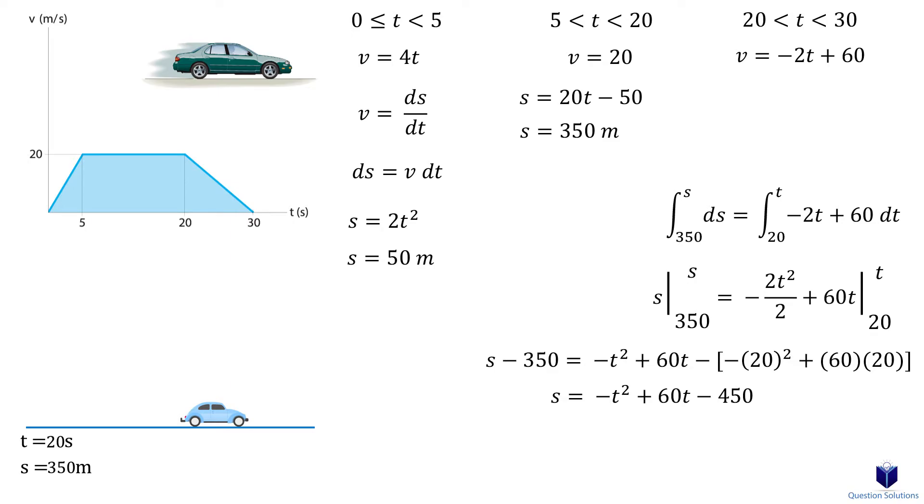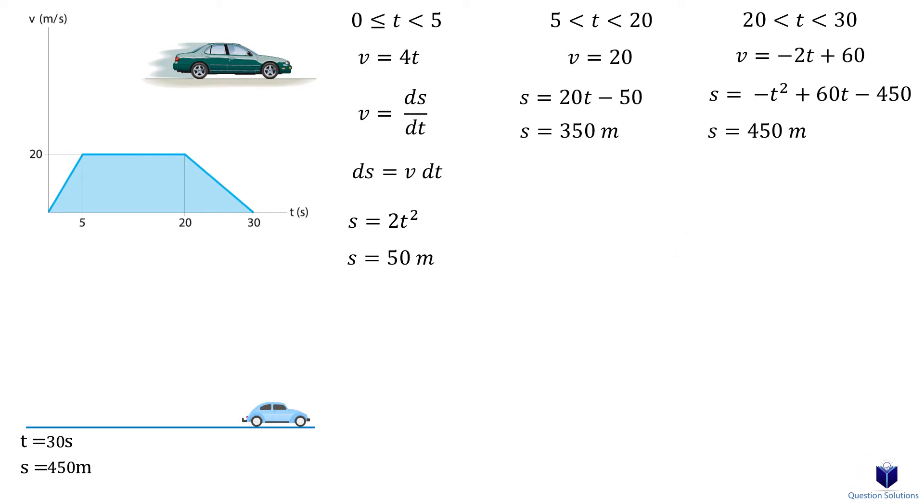Let's figure out the distance the car traveled in 30 seconds. The car moved 450 meters in 30 seconds. You can also figure out these values by calculating the area under the graph of each segment and then adding it to the previous segment. The graph looks like this.